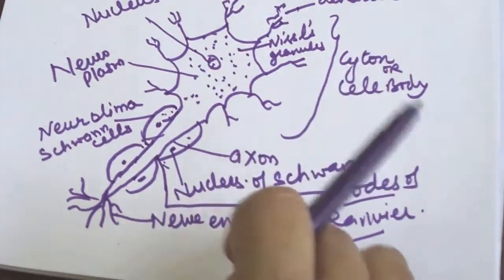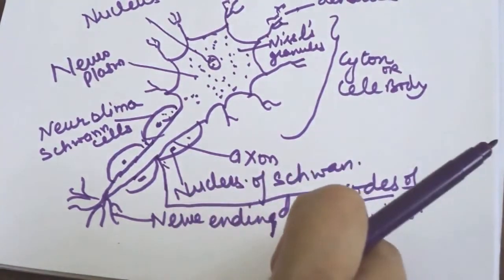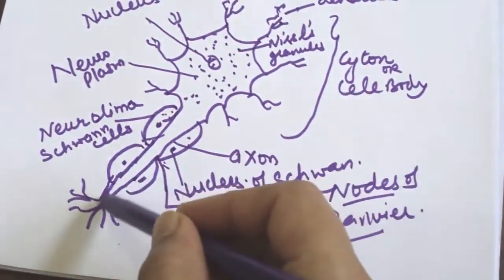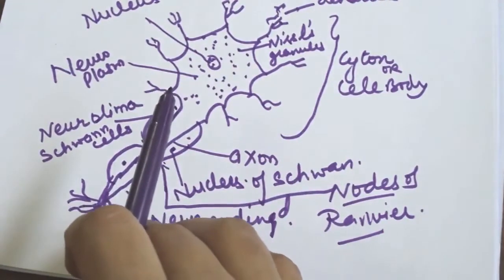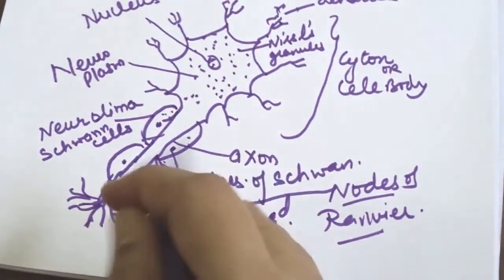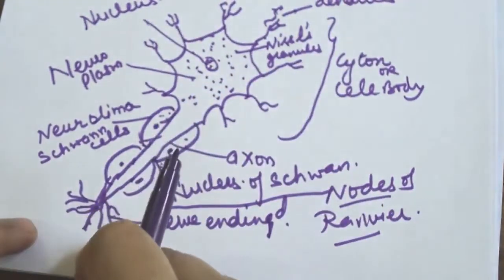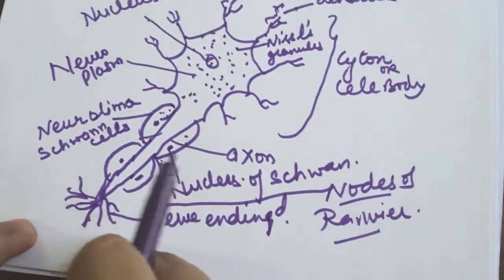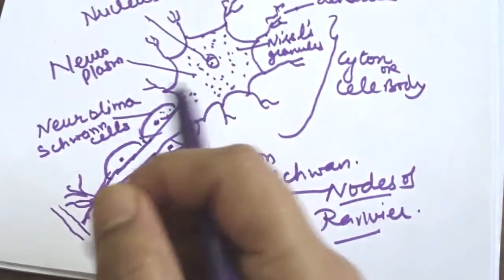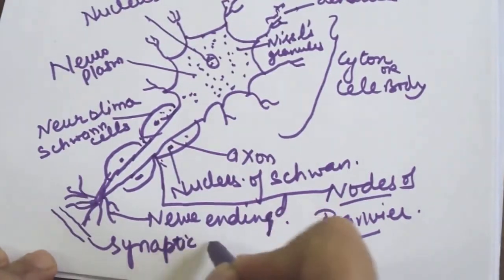The axon forms branches which are swollen at the terminal end, known as synaptic knobs. These nerve endings of one neuron attach to the dendrites of the next neuron, but they are not completely attached — there is a small space between them. That space is known as the synaptic cleft.